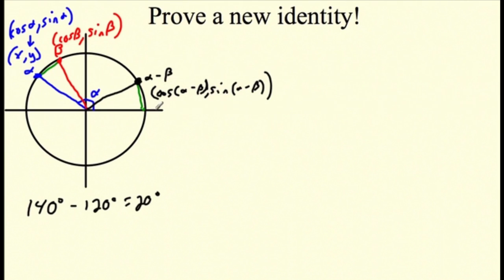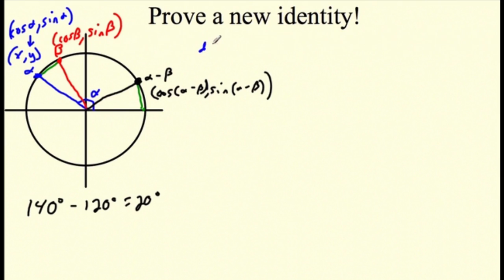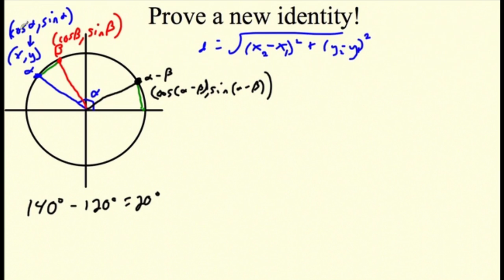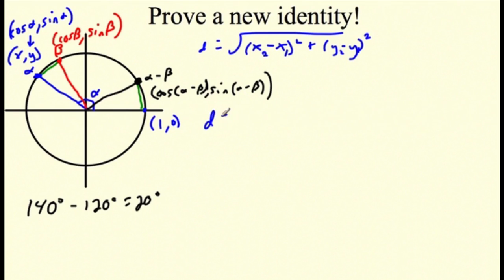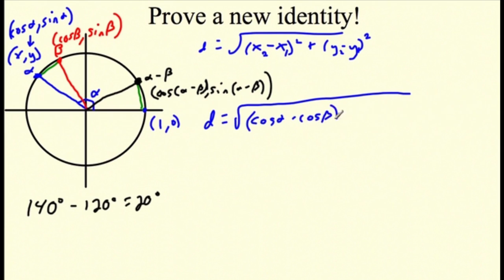We're going to use the distance formula — which is just the Pythagorean theorem — subtracting the x-values and squaring, then subtracting the y-values and squaring. Let's start with distance D1 between the blue and red points: the square root of (cosine alpha minus cosine beta) squared plus (sine alpha minus sine beta) squared. That's the distance between those two points.